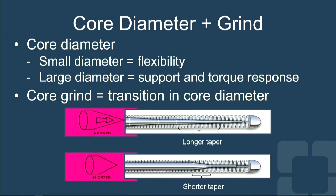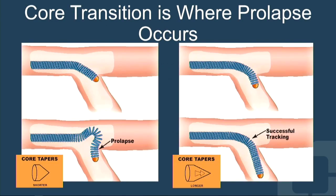The core itself has several dimensions. There's a diameter and also a taper. The thicker the diameter of the core, the more supportive it is to deliver equipment; the thinner the core, the more flexible the wire. The core has to be tapered or ground down — this can be done in stepwise increments, like a Saturn V rocket, or in a parabolic grind. The transition of that core is important: an abrupt transition means the wire will not make corners very well and will prolapse, whereas a core that tapers over a longer distance is far more flexible and far more likely to make turns.